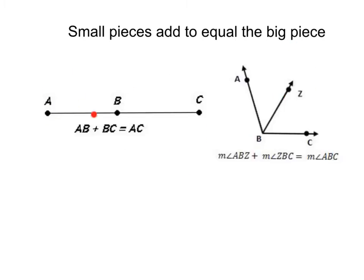Looking at this segment here, we can see that the small piece AB plus the other small piece BC is going to equal the large piece AC. The small pieces add to equal the big piece.